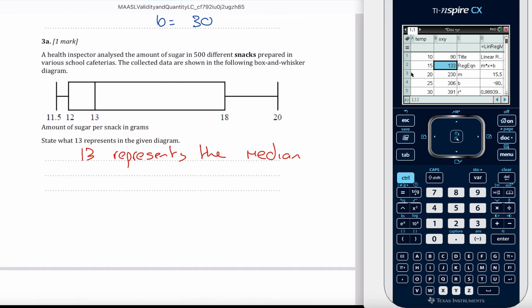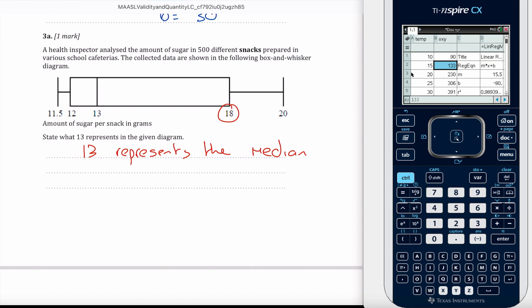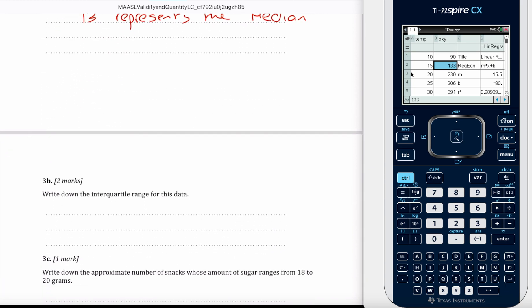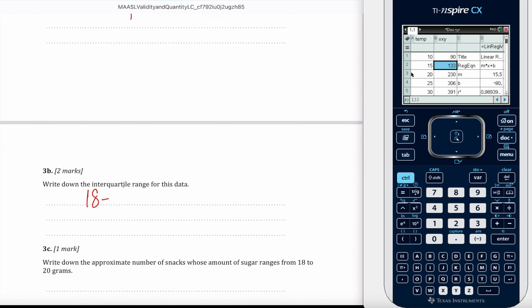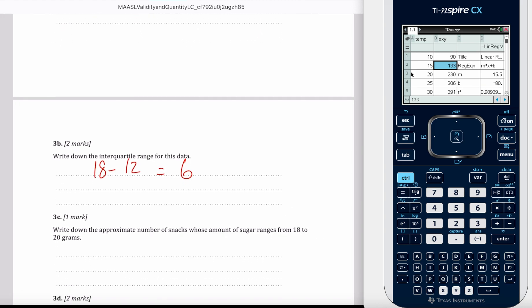Write down the interquartile range for this data. Okay, so the interquartile range is the difference between our upper and lower quartiles. We're going to have 18 minus 12. I know you can do this in your head, but show that value for your M1A1.